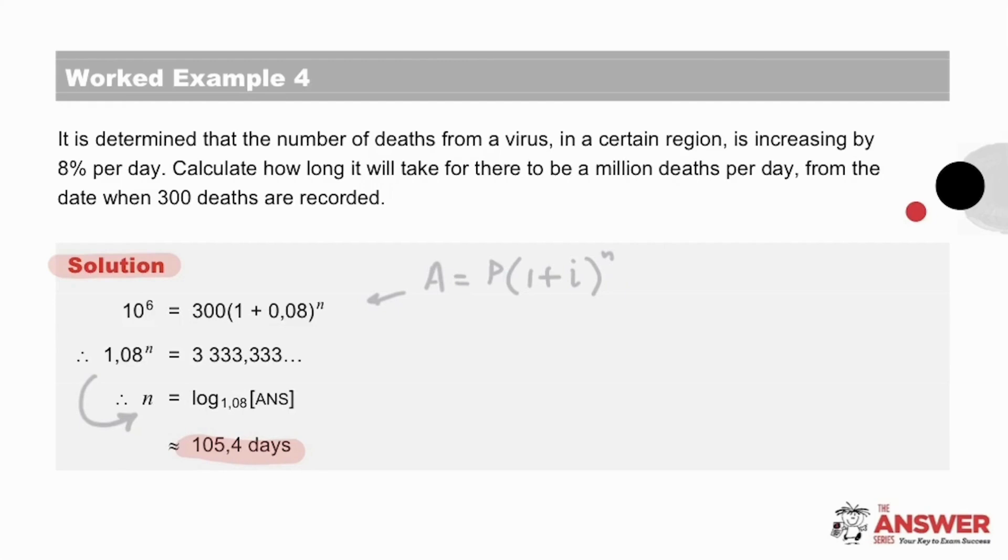Now check your question for what they are asking you to find. In this question they have asked us to calculate how long it will take and so the value for n is the final answer. An interpretation of this answer is that in about 3.5 months the number of deaths per day will increase from 300 to 1,000,000 at an 8% per day increase rate. It is useful to get into the habit of doing a quick interpretation of your final answer as this helps to see if your answer makes sense with the information given.